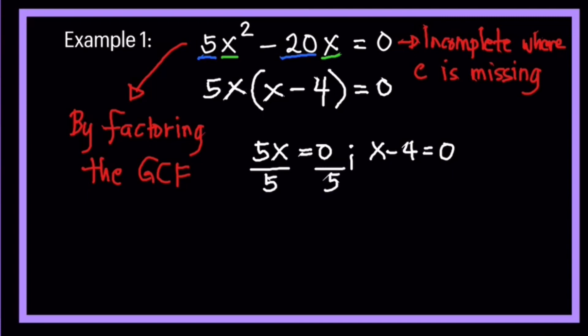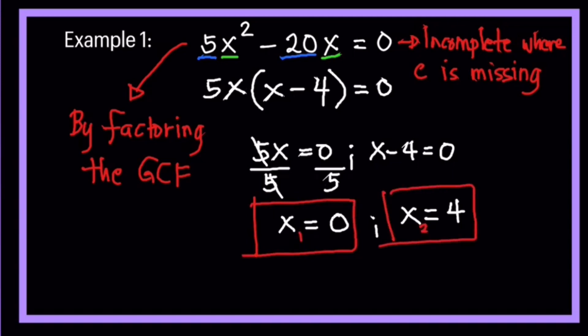First, divide both sides by 5 to solve for x. 0 divided by 5 is equal to 0. On the other one, transpose 4 on the other side, that becomes positive 4. So there are two possible values, there are two solutions. We have x sub 1 and x sub 2: 0 and 4. And we call this one as the solutions of the equation. That's it for example number 1.